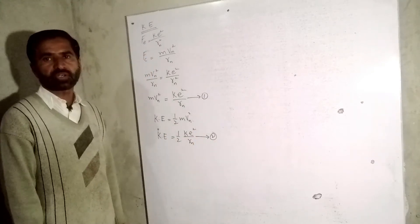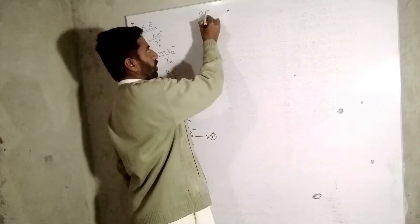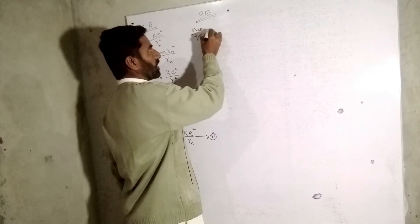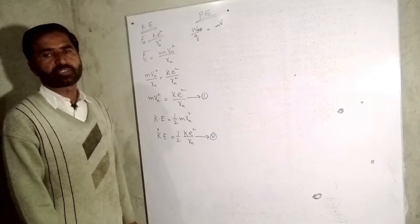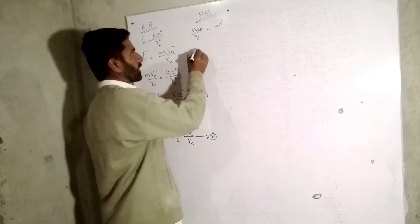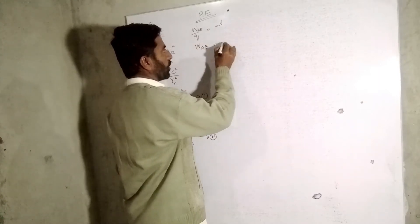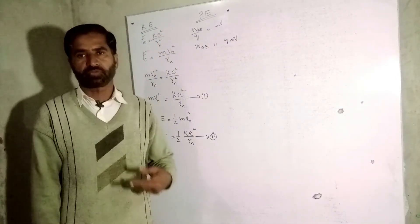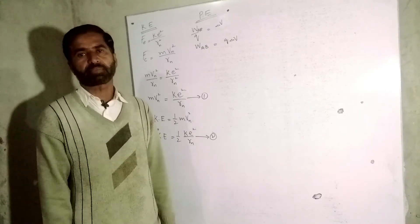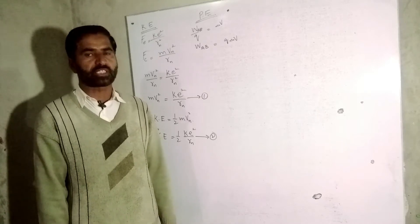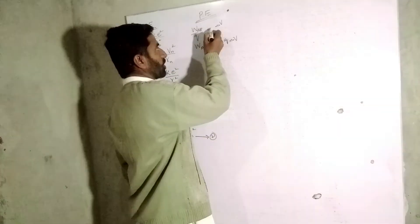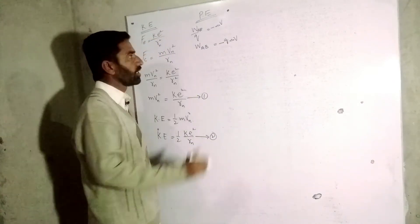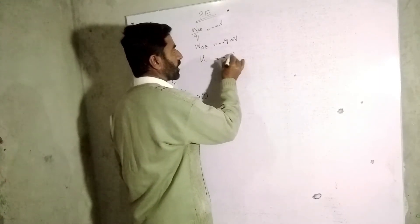We have calculated the kinetic energy. Now we calculate the potential energy. Work done on a unit charge in taking a charge from point A to B is known as potential difference, which we discussed in chapter 12. This can be written as Wab = q·ΔV. The electrostatic force and the force applied to move the charge are opposite to each other, so the work done is stored as potential energy with a negative sign. Potential energy u = −e·ΔV.